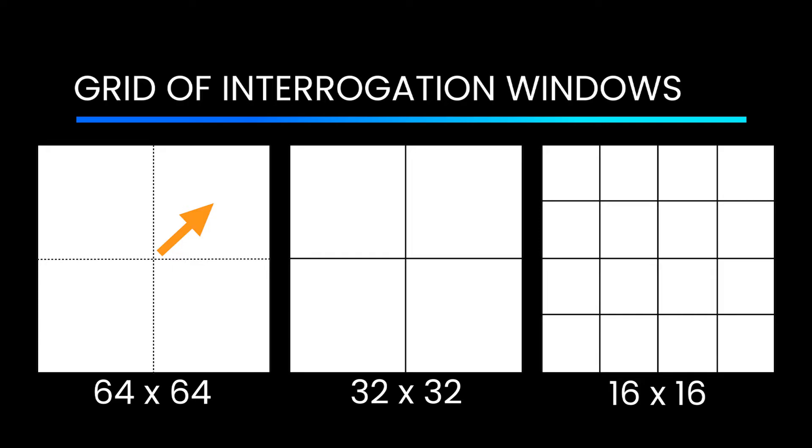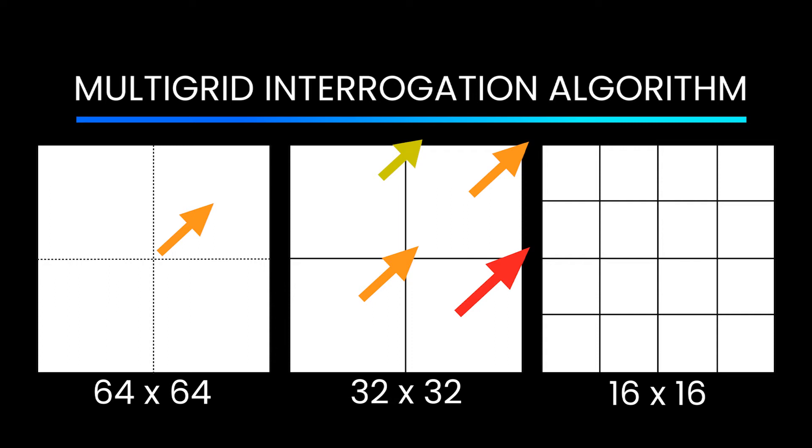In order to achieve the best results, many techniques have been devised over the years, including multi-pass multi-grid algorithms. In these algorithms, data is first interrogated on a grid using a large interrogation window, as shown here with 64x64 pixels.